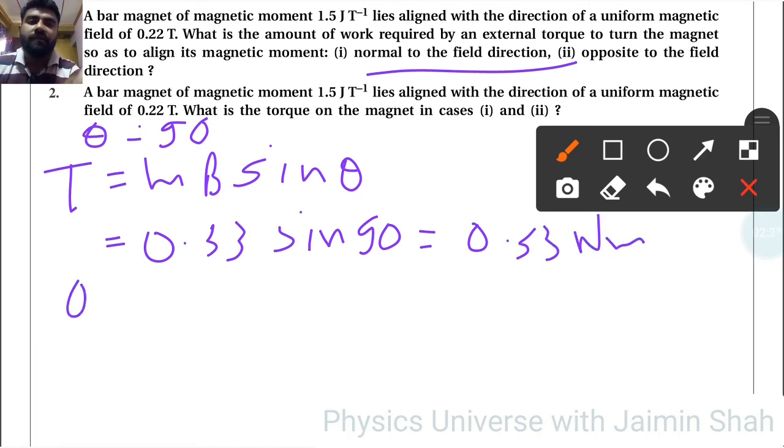And for second case, θ = 180. τ = mB sin 180. Sin 180 is 0, so the answer is 0.